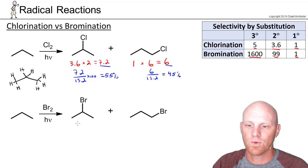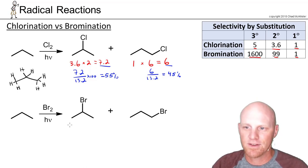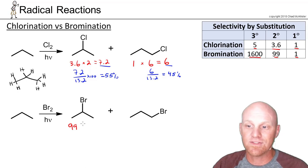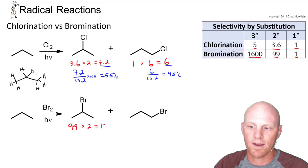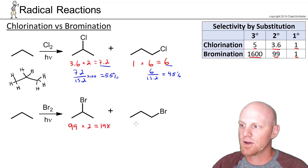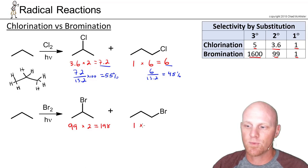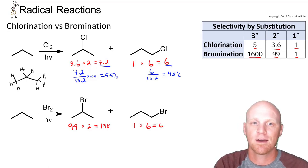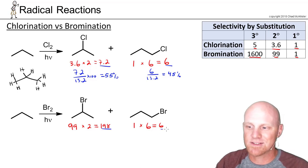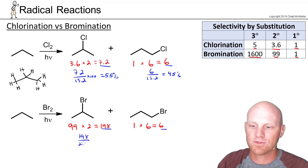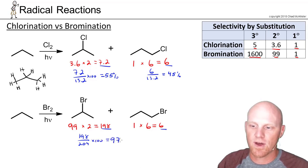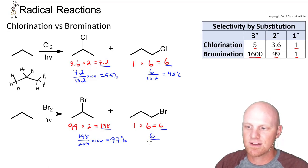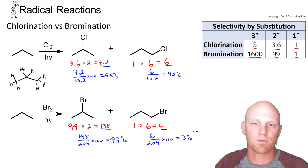Doing the same thing with bromination shows why we get such a higher ratio. The secondary position has a selectivity of 99 to 1 over primary. With two hydrogens available, that's 99 × 2 = 198. For the primary position, the selectivity is 1 with six chances, giving 6. So 198 + 6 = 204 total. The secondary product has a 198 out of 204 chance, times 100, which comes out to around 97%. The primary product has a 6 out of 204 chance, giving 3% — that's where those numbers came from on the last slide.